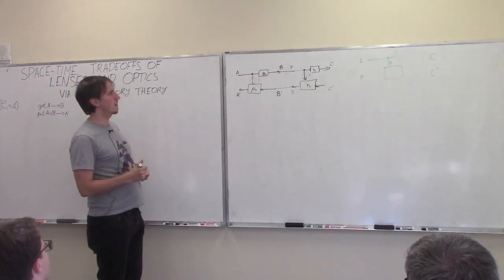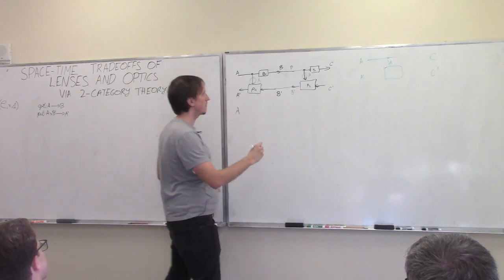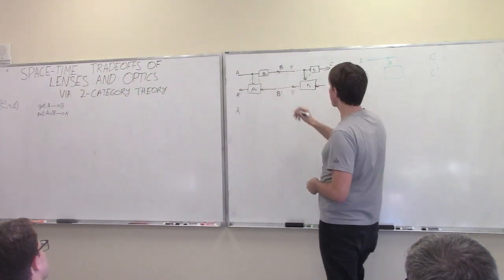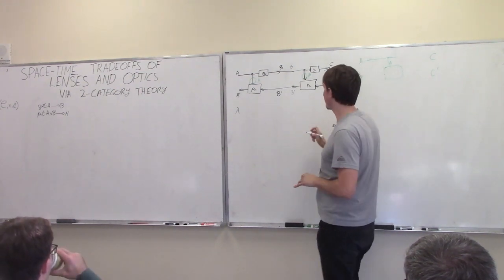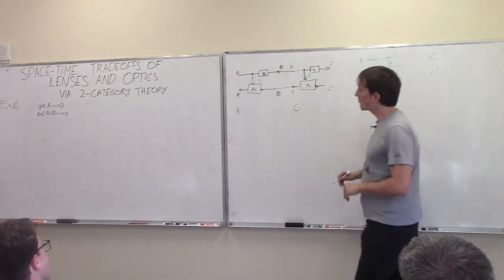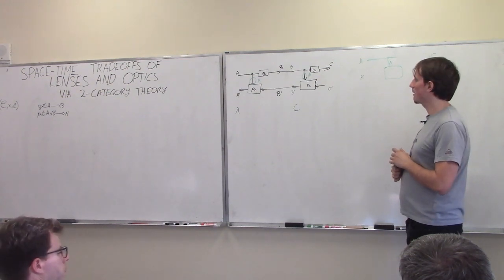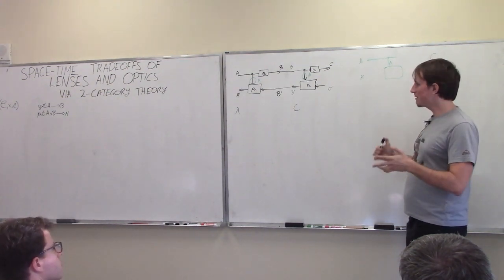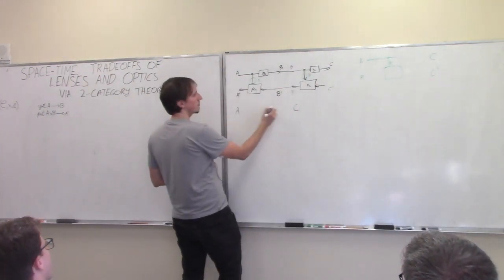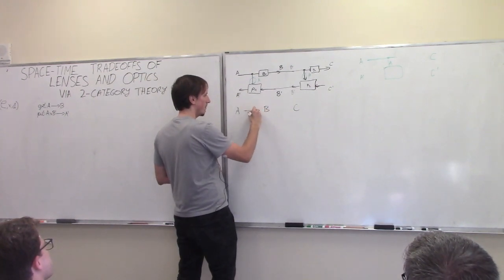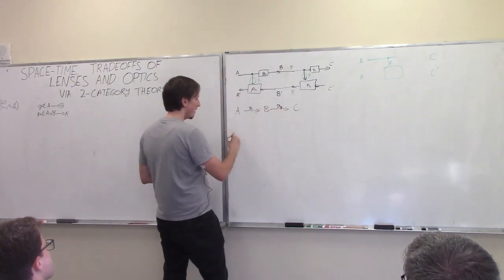I'm going to do this step by step. For the composite lens, we need to write the get map, which goes from A to C. Feel free to interrupt me at any point with questions. We have two lenses to compose. Their composite get map is pretty easy — we need a map going from A to C, and we do that by composing get-one and get-two. Now to write the composite put, this is going to take A, a C-prime, and we need to produce an A-prime.